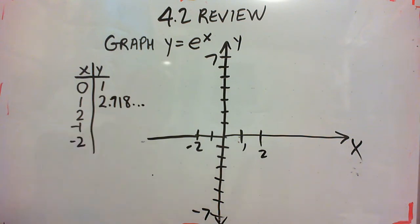Now e squared. To find e squared, you have to find your e to the x key on your calculator, punch in 2, and then equals.